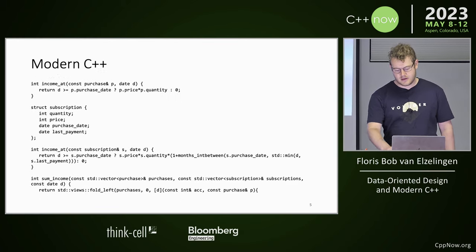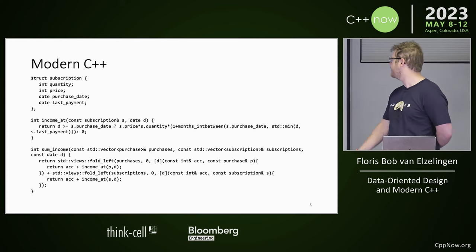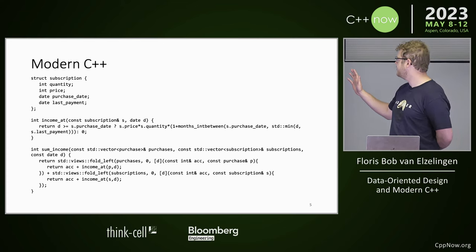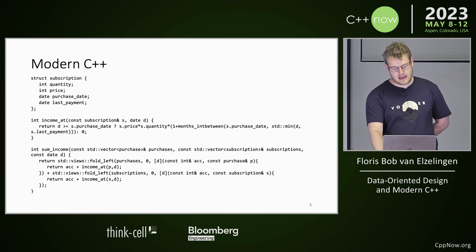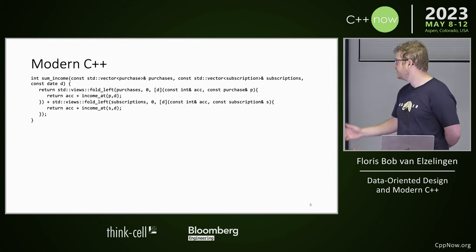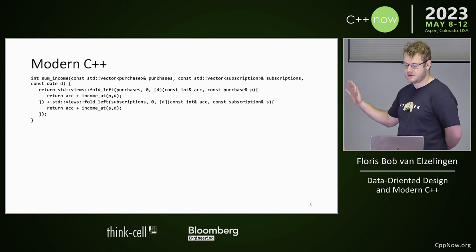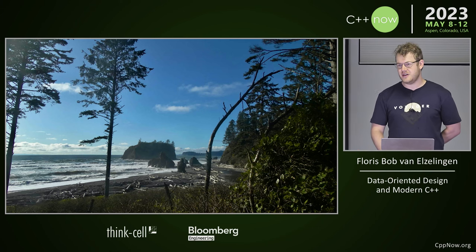Maybe an example that's a bit more fair is what you see right now. We have relatively simple types, just some free functions that use them. And if we look at our final function, this seems a lot more reasonable to me. The exact code doesn't really matter for this example.